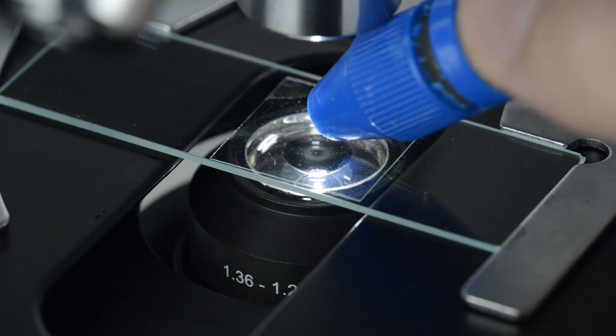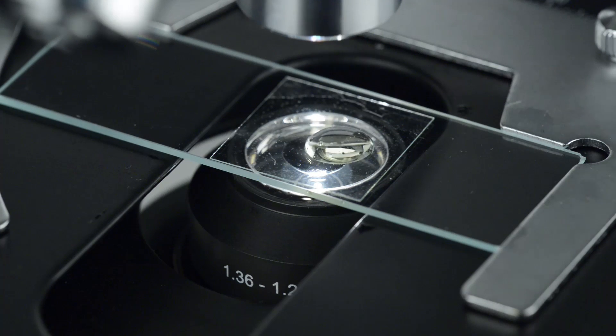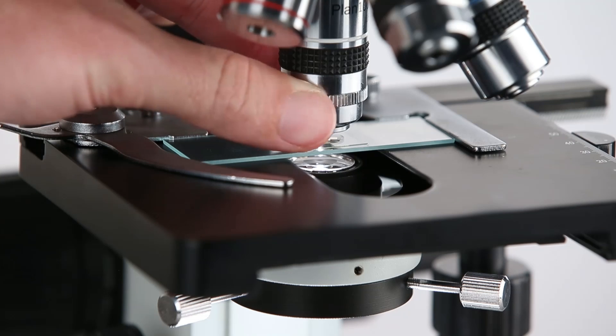If using an oil objective lens, apply a drop of oil to the cover slip. Then gently raise the stage until the oil makes contact with the lens. Now you can fine-tune the focus. If using a variable aperture lens, adjust the iris to fine-tune the contrast.